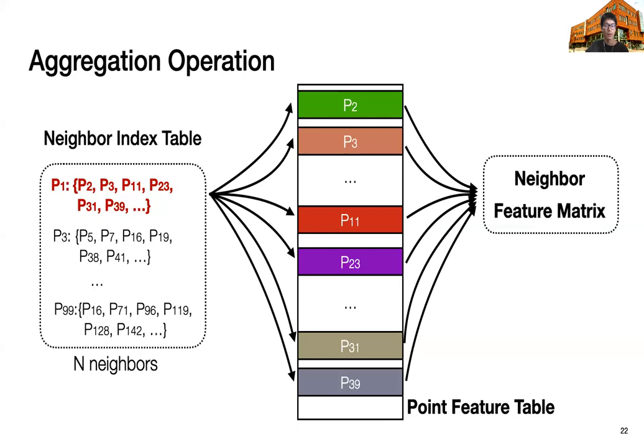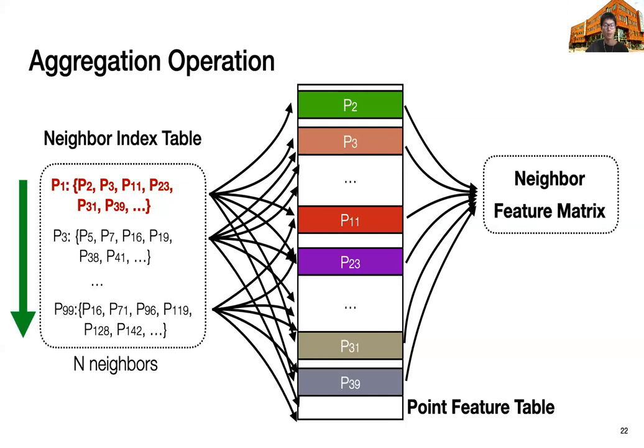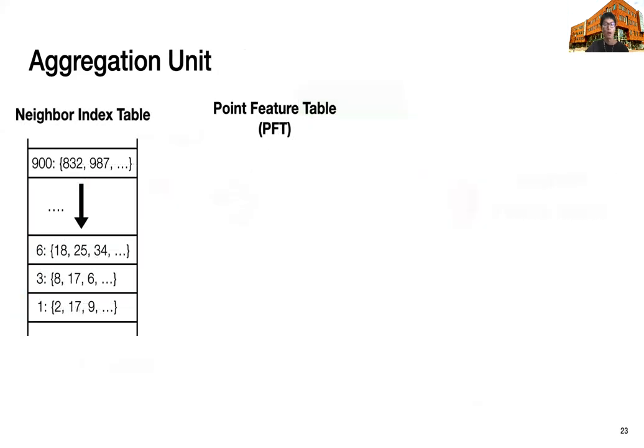Notice that the memory access to the point feature table is highly irregular. After gathering the neighbor features, each neighbor feature will be normalized by subtracting its central point feature. This operation will repeat for all entries in the neighbor index table. In the end, each point will perform a reduction to find the maximum value.